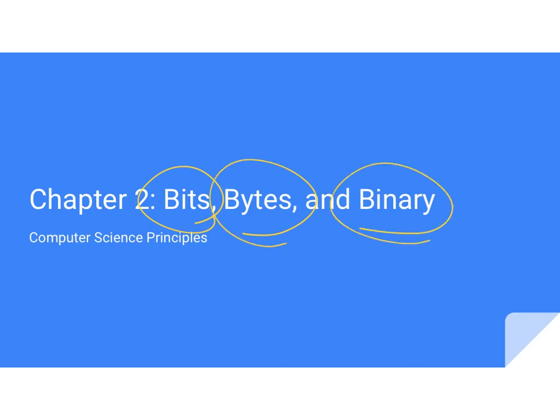Basically, whenever you see any documentaries or movies or anything about computers and you hear people talking about zeros and ones, that's what we're going to be talking about today — how a computer can use transistors that can be switched to off or on, zeros or ones, and how we can use that to represent data.